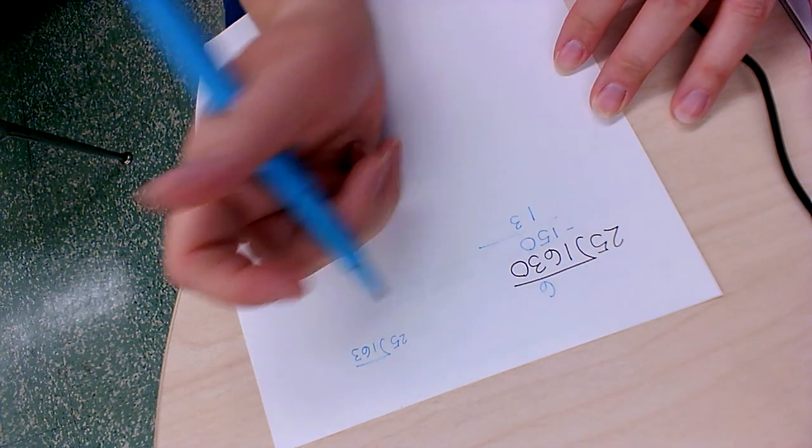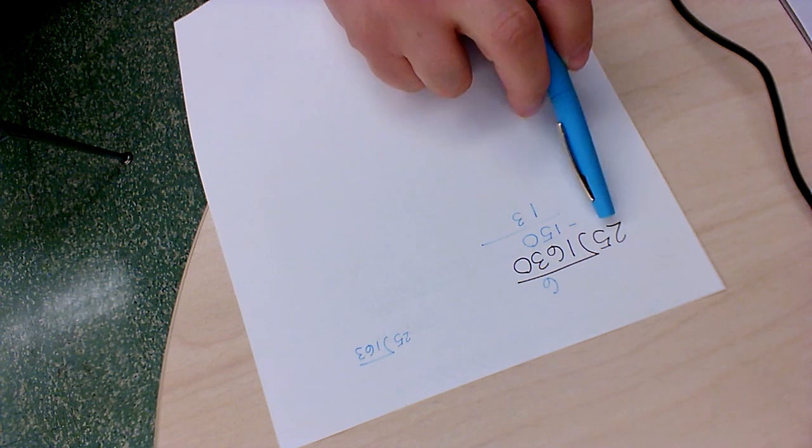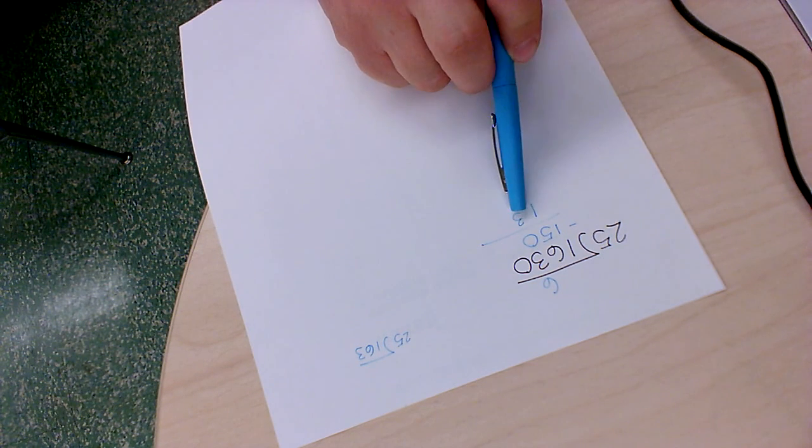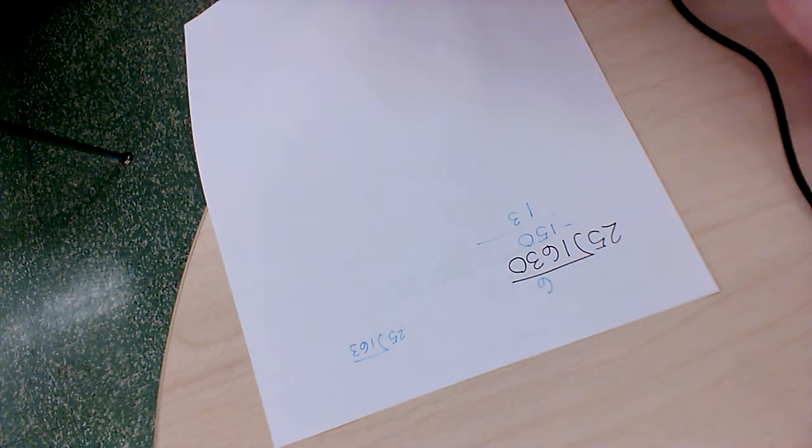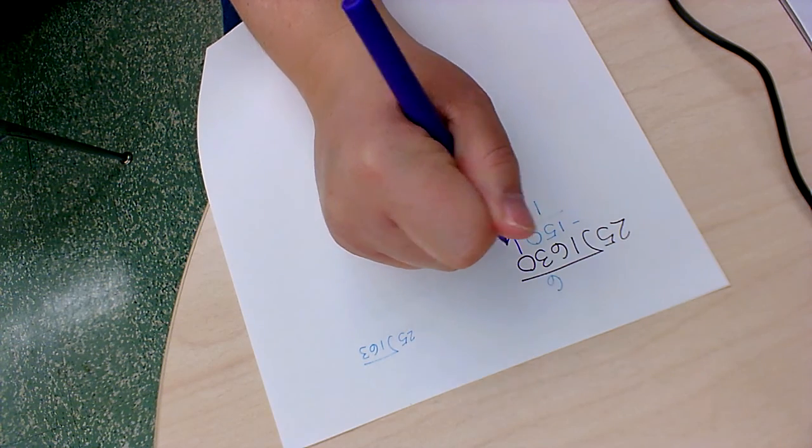Three, one, 13. And I know I'm right because I can't make a group of 25 out of 13. So now I bring down my next number.